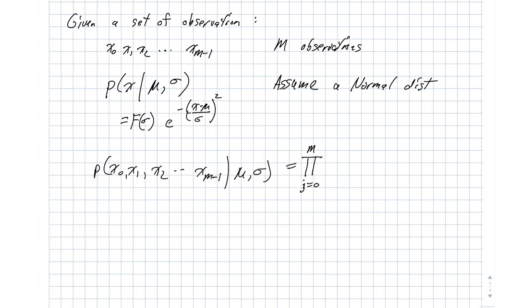Actually, let's index that by j. m minus 1, and it's the likelihood of each individual sample given our parameters. So this is our independence assumption.